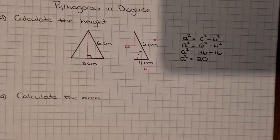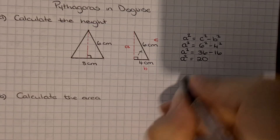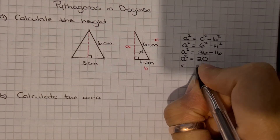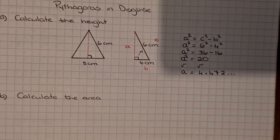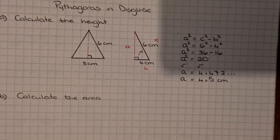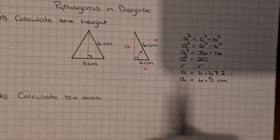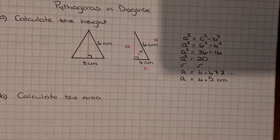So a² = 20. At this point we need to square root both sides — square rooting on each side of the equal sign — and you'll need a calculator for this one. You should get 4.472..., and rounding that gives us 4.5 centimetres. So the height of that triangle is 4.5 centimetres.